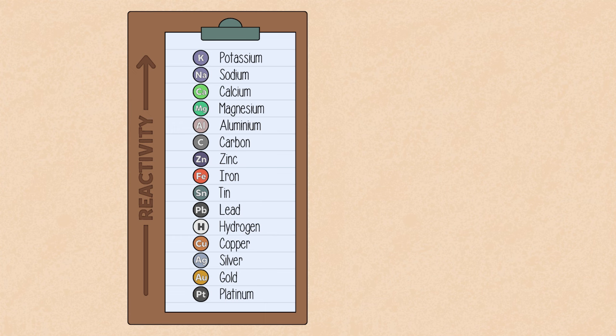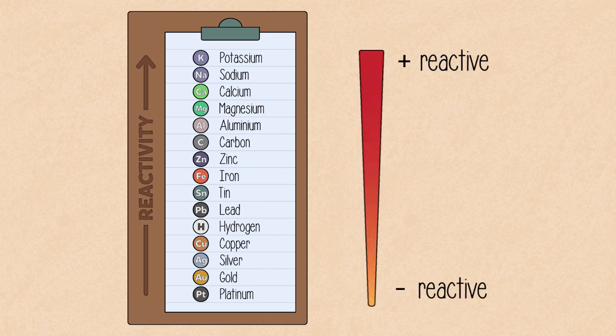In summary, the reactivity series ranks metals according to their reactivity and can be used to predict whether or not a reaction will happen.